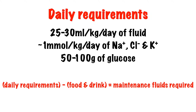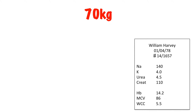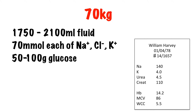It's important to remember that these figures include any eating and drinking that the patient may already be doing. So let's say that our patient weighs 70 kg and appears to have a normal body habitus, and their urea and electrolytes are normal. That works out at between 1,750 and 2,100 ml of fluid, approximately 70 mmol each of sodium, chloride and potassium, and 50 to 100 grams of glucose.